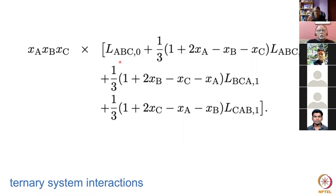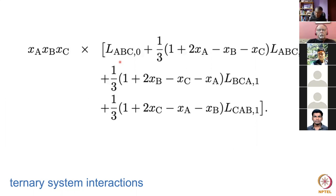Furthermore, there are systematic journals in which such data are published — for example the CALPHAD journal, which stands for computer calculation of phase diagrams, and another journal called Phase Equilibria — where such data are published and assessed by the whole community.